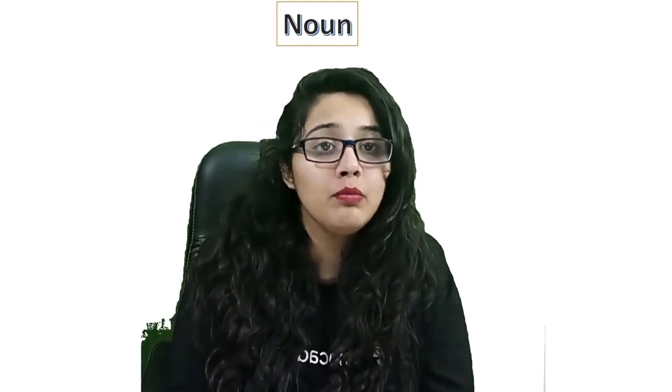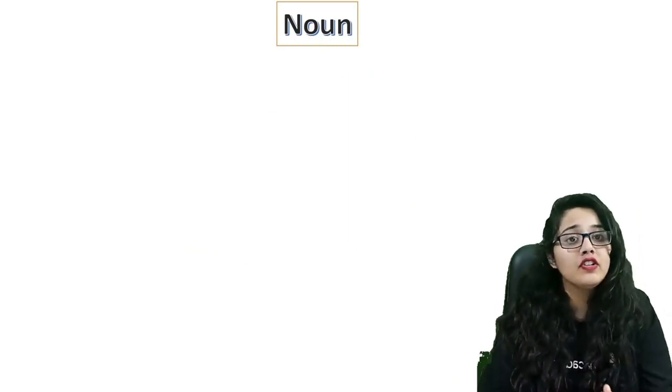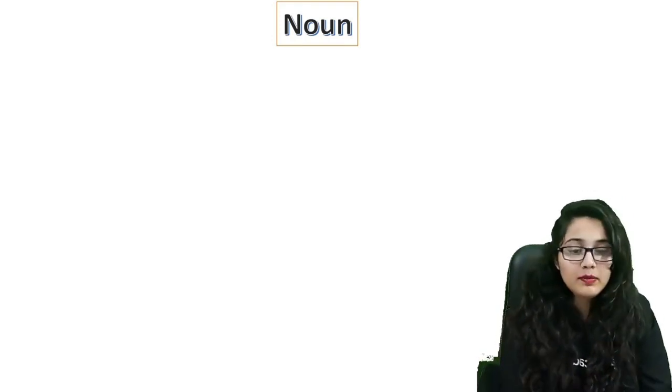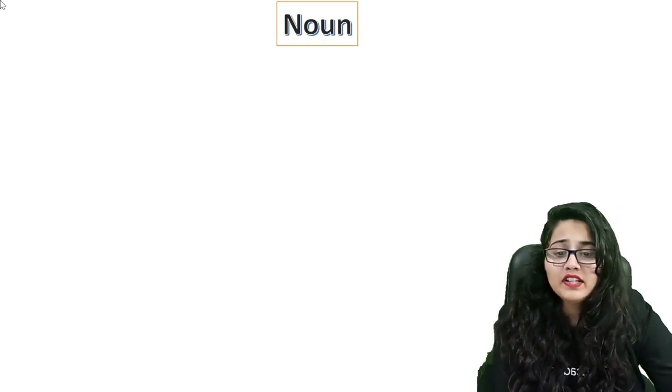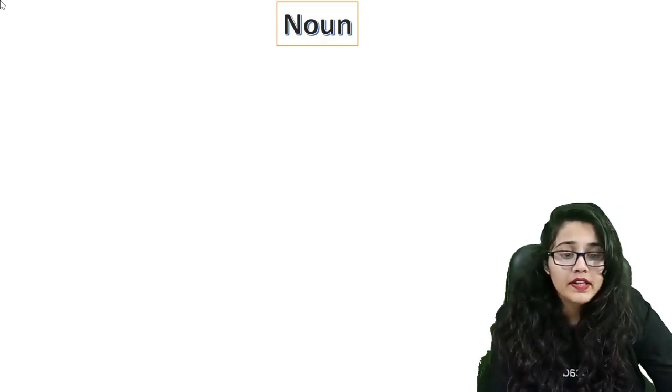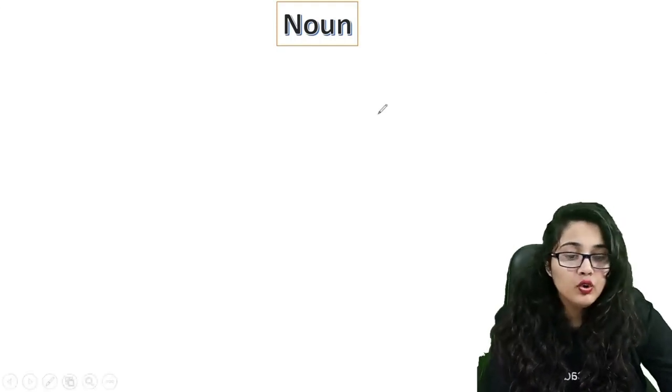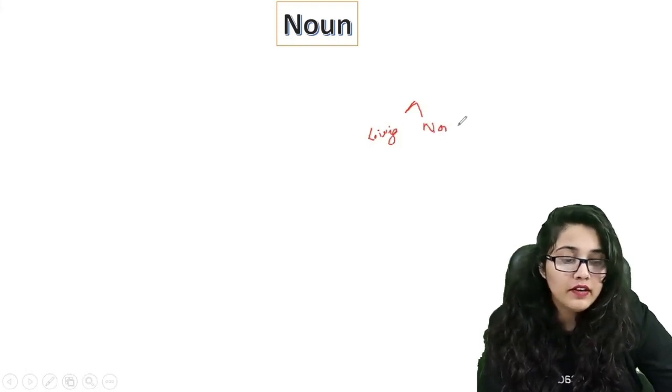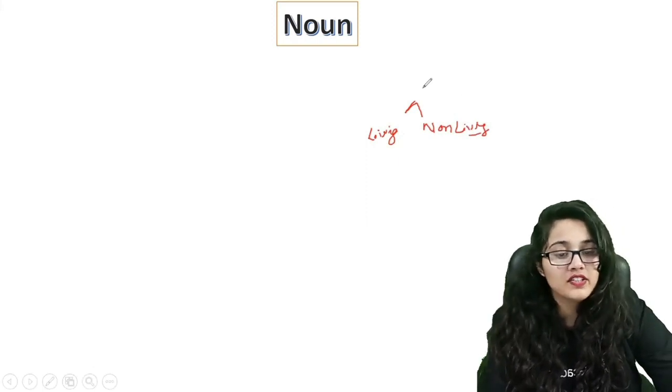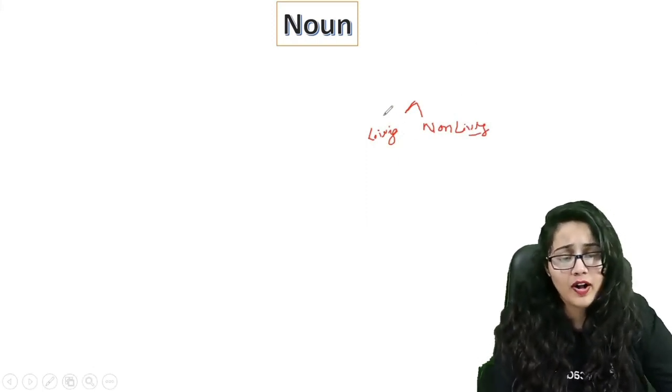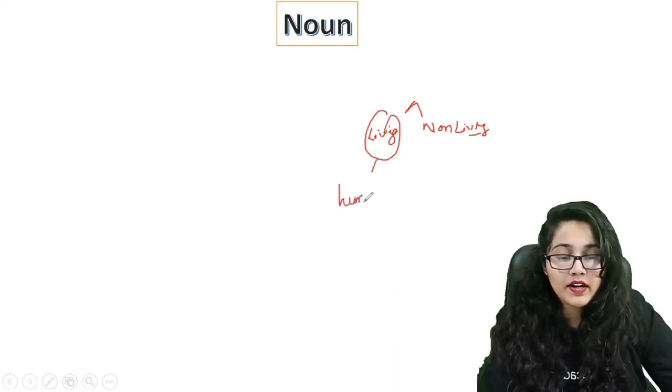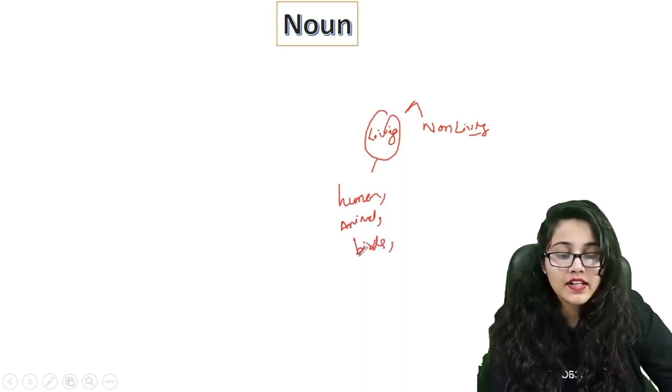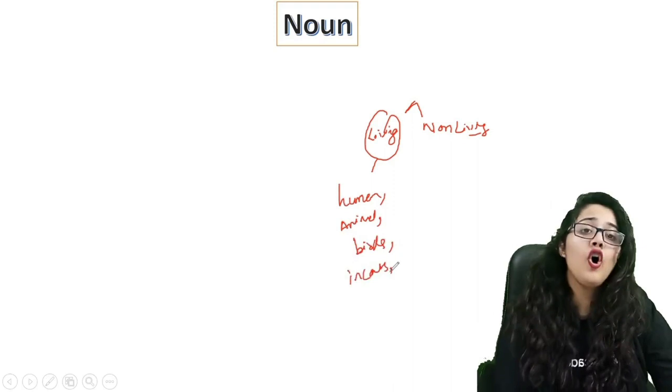The first thing we are going to do here is Noun. In detail, I will give you what is the noun, what are the types and all the related things. If we do some general categorization, there are two things: one is living and one is non-living. In living, you have human, animal, birds, insects.